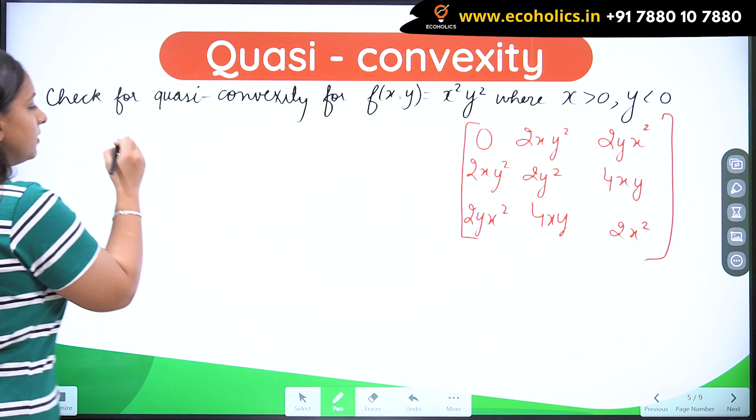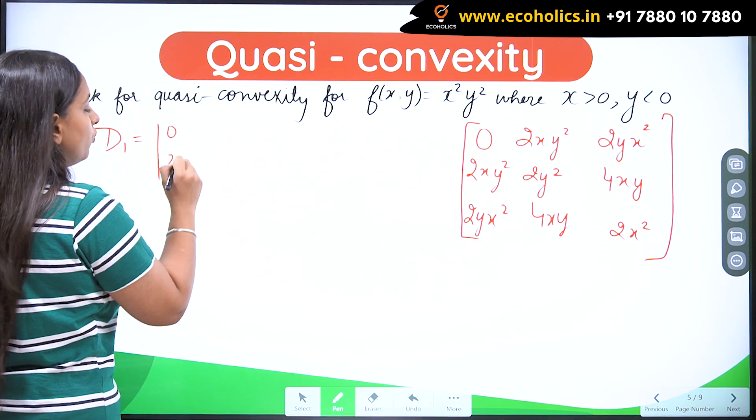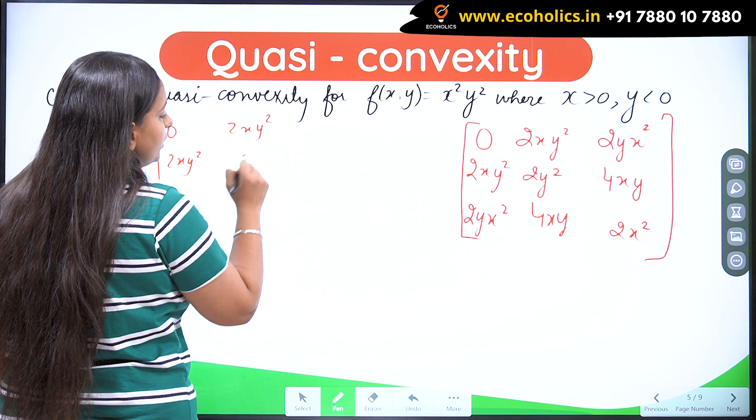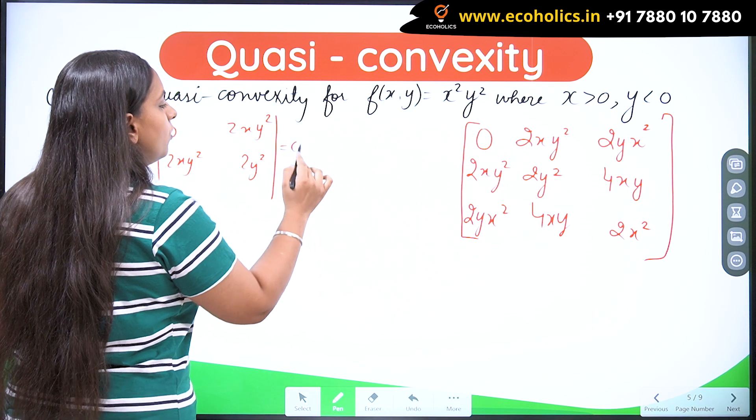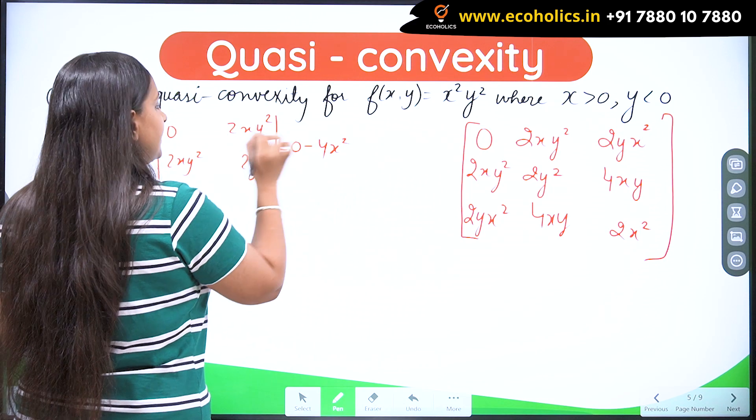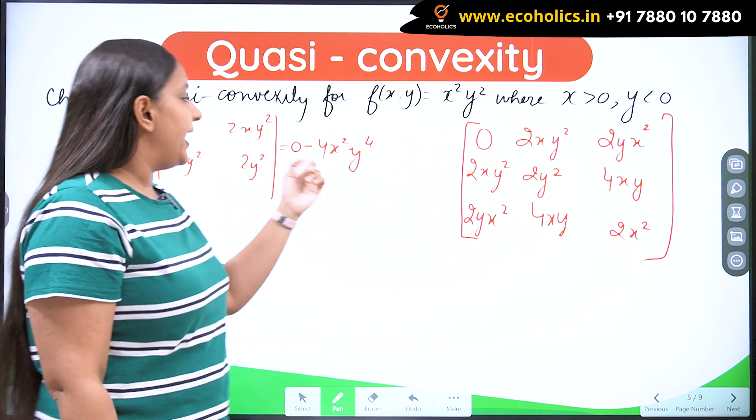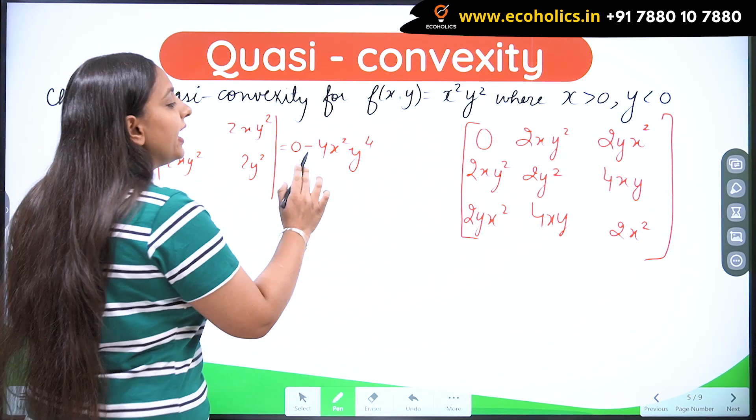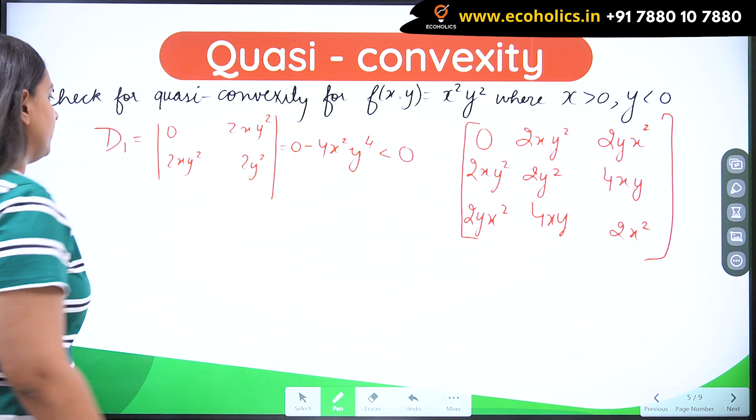Now let me check the d1 determinant. So d1 determinant would be 0, 2xy square, 2xy square and 2y square. So what is going to be the value? This and this are going to become 0 minus 4x square y raise to the power 4. Now since we have even powers, x square and y raise to the power 4, they would be positive. But I have a minus 4. So this is going to make them strictly negative.